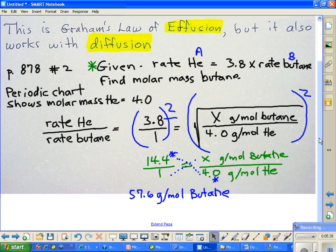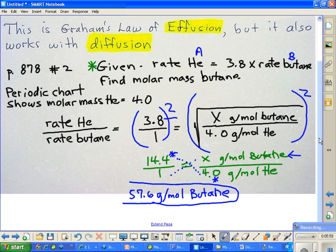The x grams per mole of butane is actually equal to our 57.6. So indeed, 57.6 is our grams per mole of butane, and that's how you get this answer.